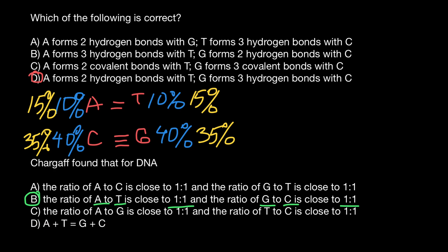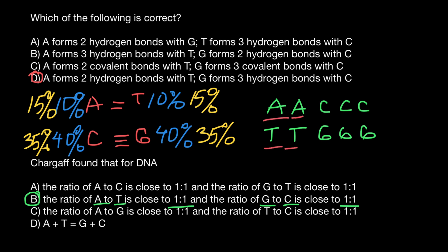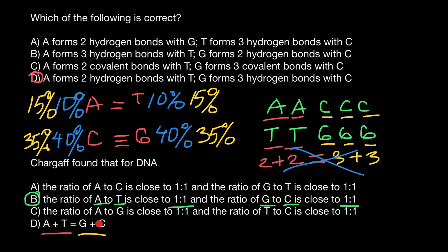Let's say we have a sequence of double-stranded DNA: A, A, C, C, C. Then the other strand is going to be T, T, G, G, G. Using this simple example, we have 2 A's and 2 T's, so A plus T equals 2 plus 2. And we have 3 C's and 3 G's, so C plus G equals 3 plus 3. These are not equal, so the statement that A plus T equals C plus G is wrong.